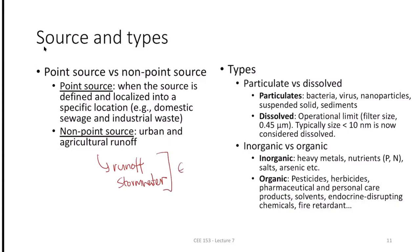For non-point source pollution, we design green infrastructures — ponds, bioswales, modified road edges. For point sources, we design engineered systems like wastewater treatment plants, where all household waste is transported to one location and treated.